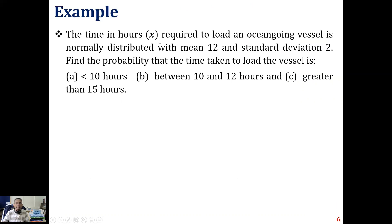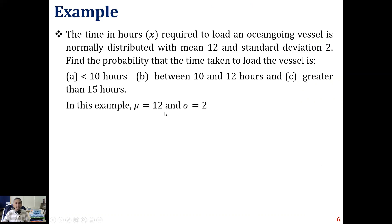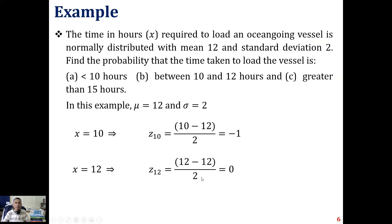Let's do an example. The time in hours x required to load an ocean-going vessel is normally distributed with mean 12 and standard deviation 2. We are asked to find the probability that the loading time is (a) less than 10 hours, (b) between 10 and 12 hours, and (c) greater than 15 hours. With mu = 12 and sigma = 2, we compute: x = 10 gives z = -1; x = 12 gives z = 0; and x = 15 gives z = 1.5.